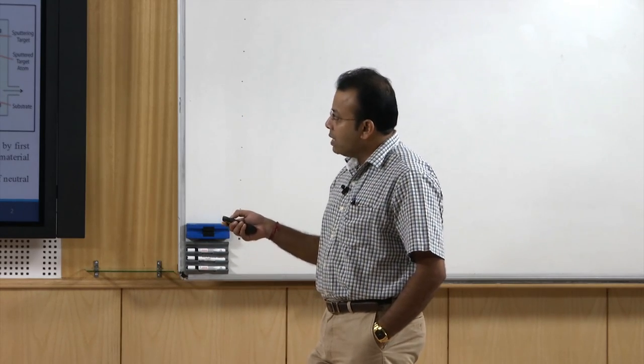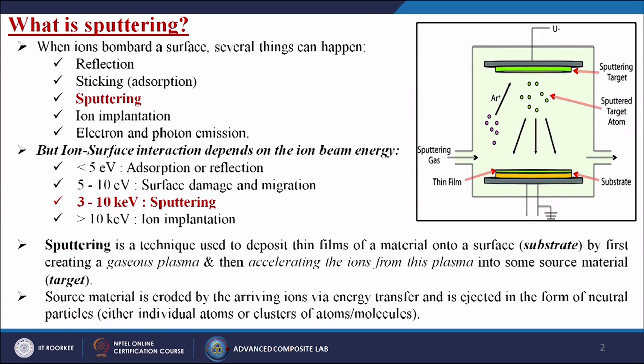Sputtering is a method where ions bombard on a surface and several things can happen: reflections, sticking, adsorptions, sputtering, ion implantation, electron and photon emissions. When all of this is taking place on the material surface, in this particular topic we are going to discuss only about the sputtering.